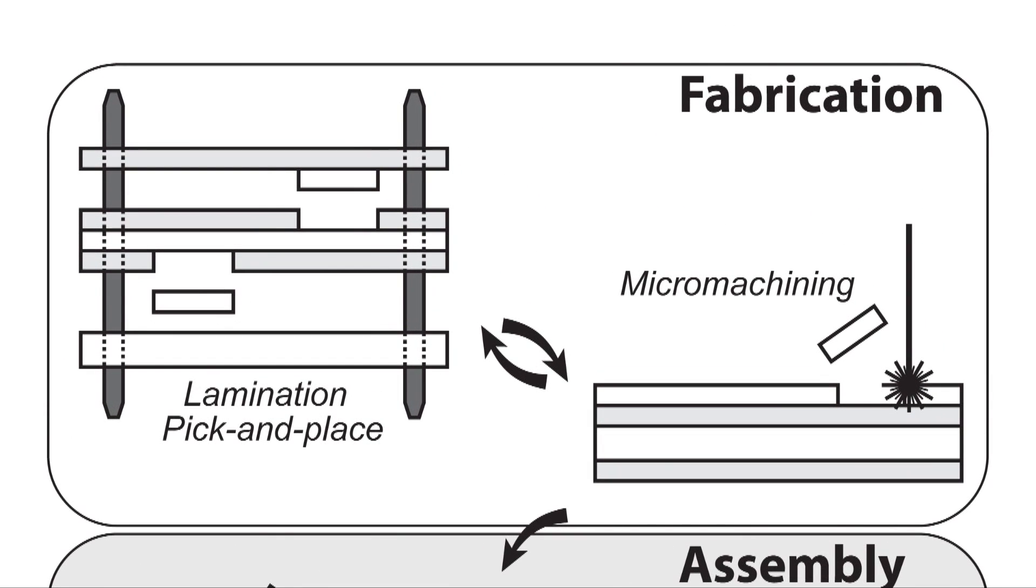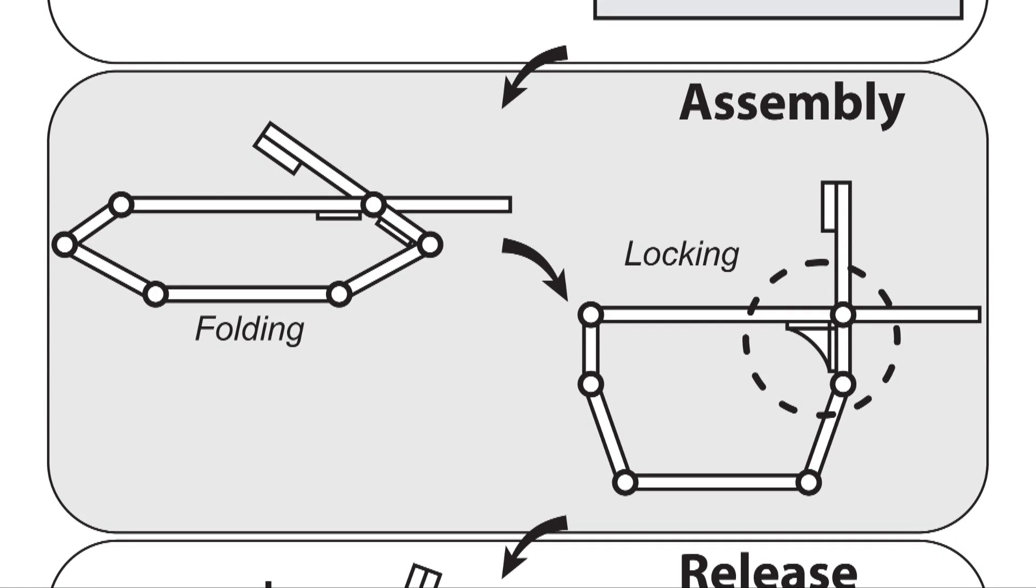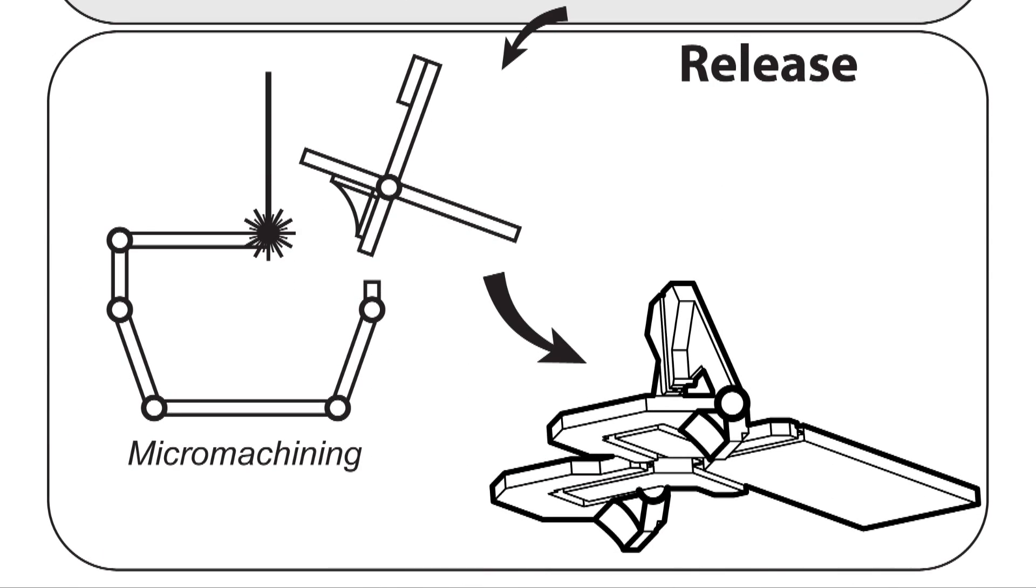While fabrication allows us to create complicated flat structures, pop-up folding and locking allows to assemble these flat structures into three-dimensional machines, similar to a pop-up book. A release step completes the machine by removing any extraneous components.